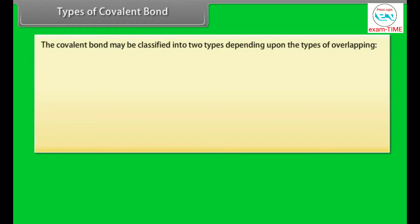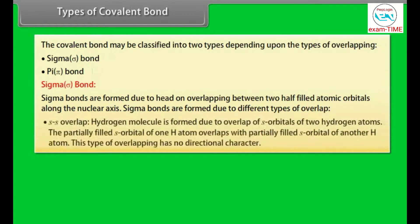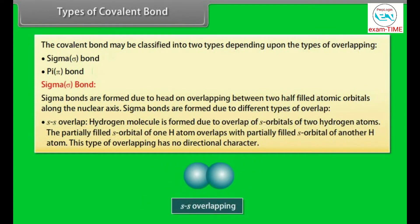The covalent bond may be classified into two types depending upon the type of overlapping: sigma bond and pi bond. Sigma bonds are formed due to head-on overlapping between two half-filled atomic orbitals along the nuclear axis. For S-S overlap, the hydrogen molecule is formed by the overlap of S orbitals of two hydrogen atoms. This type of overlapping has no directional character.